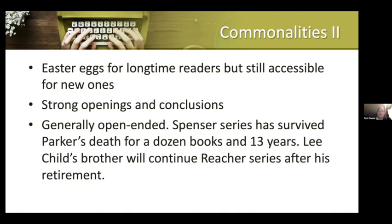Some more commonalities: every book needs to be accessible for new readers — if book 15 is the first one they've read, they should be able to pick it up and know who's who and what's happening. That said, you can include Easter eggs for long-time readers who will recognize certain elements. Your openings and conclusions should be strong. Whereas fantasy is defined by trilogies or closed series of a fixed number, mystery and thriller series tend to be open-ended. Lee Child's brother is going to continue the Reacher series. Robert B. Parker died in 2010, and since then there have been 12 more books written in the Spenser series — the series has survived the author.